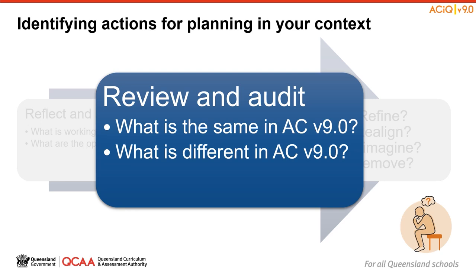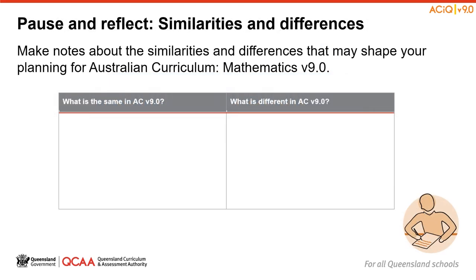As we work through the Mathematics Curriculum Elements section and the changes we can see in Version 9, let's keep our process for identifying actions for planning in mind. Here is where we can begin to audit our current plans and consider what is the same in Australian Curriculum Version 9 and what is different. You may wish to construct your own note-taking template like the one indicated on screen to help you identify the similarities and differences you notice that may shape your planning for the new curriculum. A table has been provided for you in the Session 2 Outline resource.